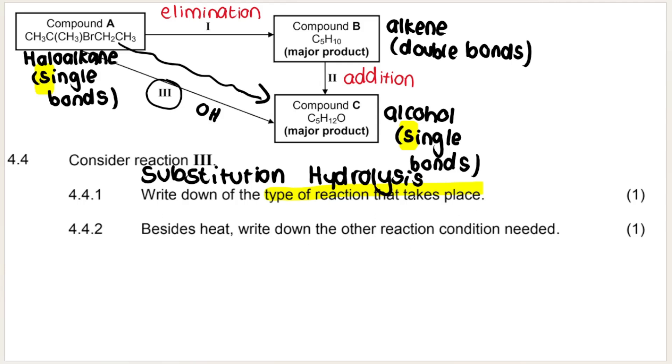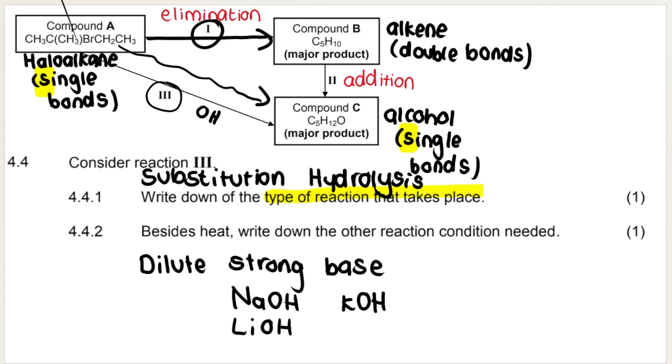Besides heat, write down the other reaction condition needed. And this one is the dilute strong base. So for example, sodium hydroxide, potassium hydroxide, lithium hydroxide. And now you might think, this sounds familiar. Didn't we kind of say this earlier for some other reaction? Remember dehydrohalogenation, my first reaction that I spoke about, involved concentrated strong base. The substitution hydrolysis involves dilute strong base. And they love asking dehydrohalogenation versus hydrolysis because they have similar reaction conditions. That's why the word dilute is very, very important.